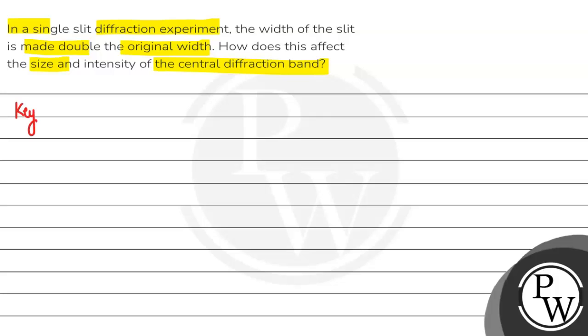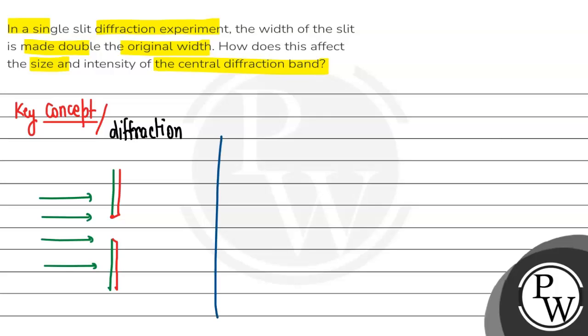So the key concept you are going to use here is diffraction. Diffraction kya hota hai - suppose light travels in a straight line form, and it encounters some resistance. The light bends from the corner. The bending of light from the corners of the slit is known as diffraction.